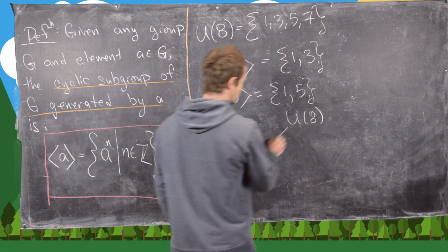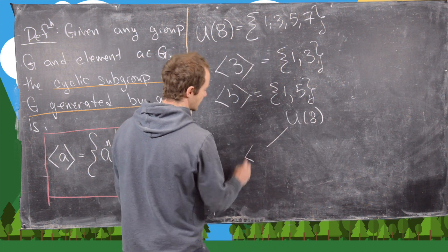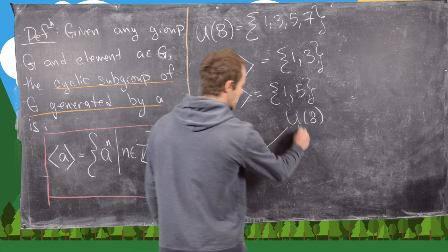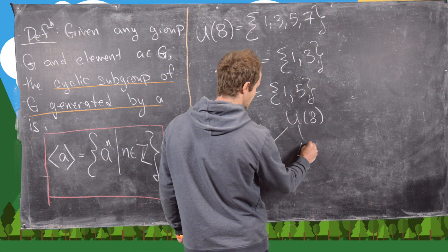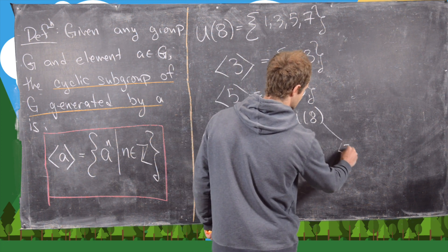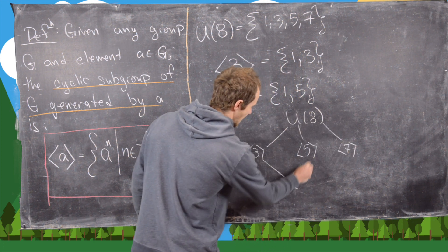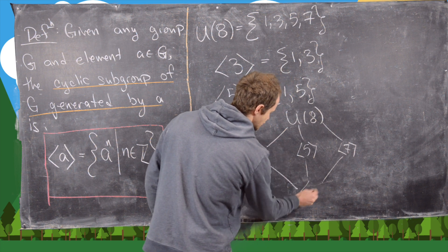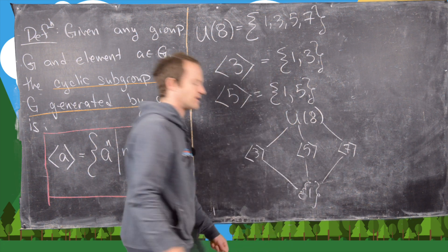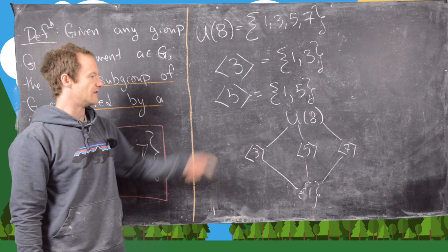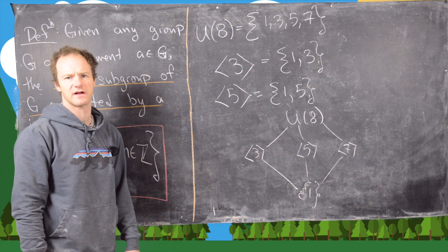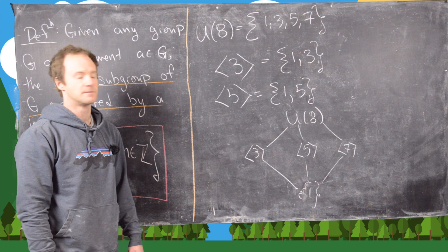This gives us a nice picture of U8. We can draw a subgroup lattice: the cyclic subgroup generated by 3, the cyclic subgroup generated by 5, and the cyclic subgroup generated by 7 all share the trivial subgroup which is just the identity. This is called the subgroup lattice for U8, and we'll look at something like this a bit later.